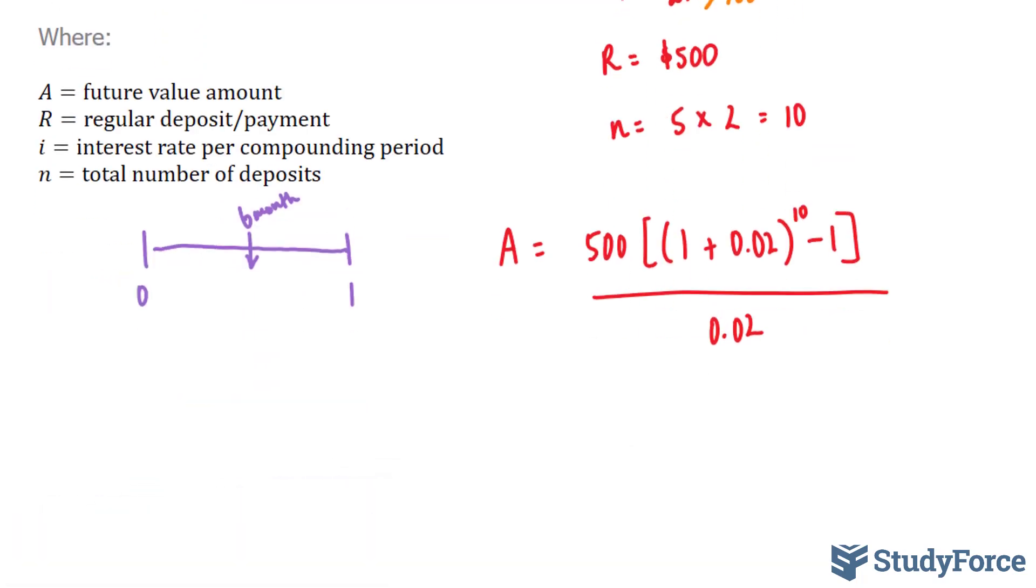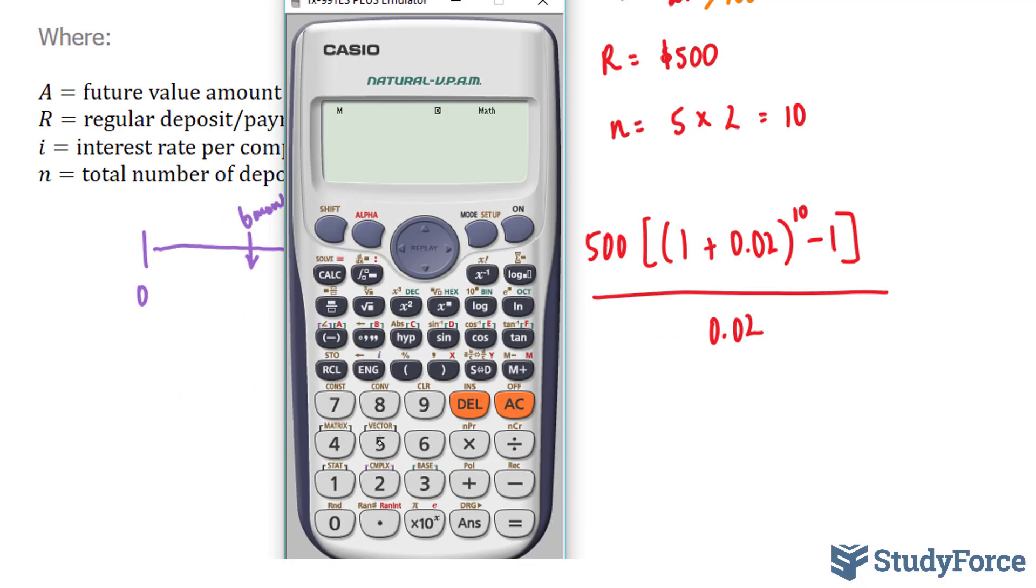Let's go back to our equation. So we're going to use our calculator to evaluate this. We're going to take 500, square bracket, and on a calculator you don't have square brackets, just use ordinary brackets. This bracket, 1 plus 0.02 to the power of 10, minus 1, and that will give you the top part, and we're going to divide that by 0.02, and we end up with 5,474.86.